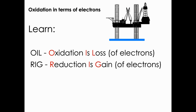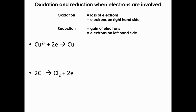We can also look at oxidation in terms of electrons. You need to learn the expression OIL RIG — oxidation is loss, reduction is gain — when talking about electrons. Pause the video and copy down that phrase. If oxidation is loss of electrons, then in a chemical equation, the electrons will be on the right-hand side. If something is being reduced, it is gaining electrons, so the electrons will be on the left-hand side of the equation.